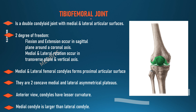The tibiofemoral joint is a double condyloid joint with medial and lateral articular surfaces. It has two degrees of freedom: flexion and extension occur in the sagittal plane around the coronal axis; medial and lateral rotation occurs in the transverse plane around a vertical axis. Medial and lateral femoral condyles form the proximal articular surface. There are two concave medial and lateral asymmetrical plateaus. In anterior view, condyles have lesser curvature, and the medial condyle is larger than the lateral condyle.